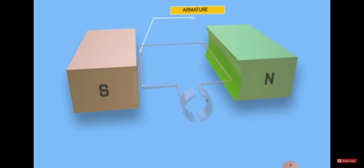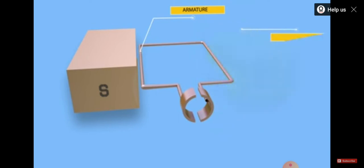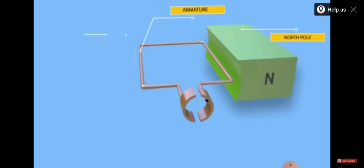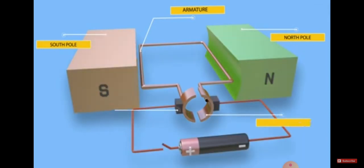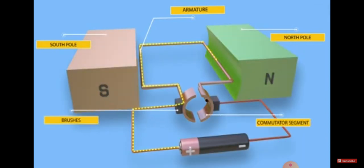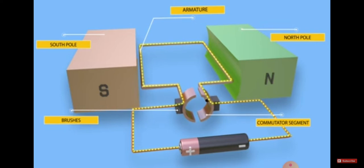The armature is fitted with conductors. The conductors are circular features of the armature. Then, at the north pole on the right side and the south pole on the left side, we compute the segments for each pole.